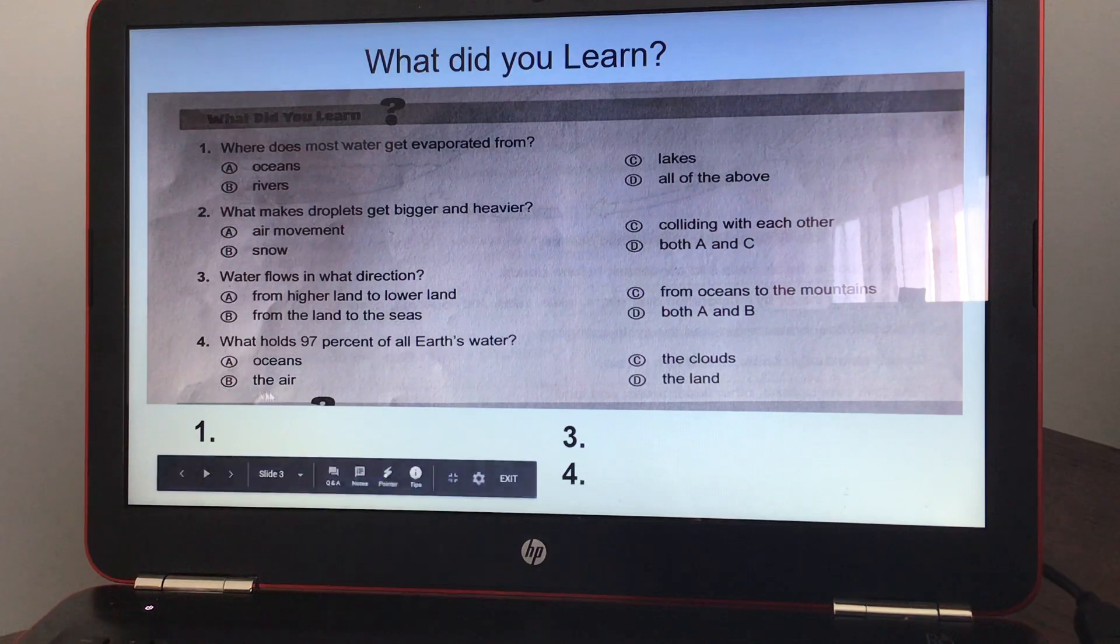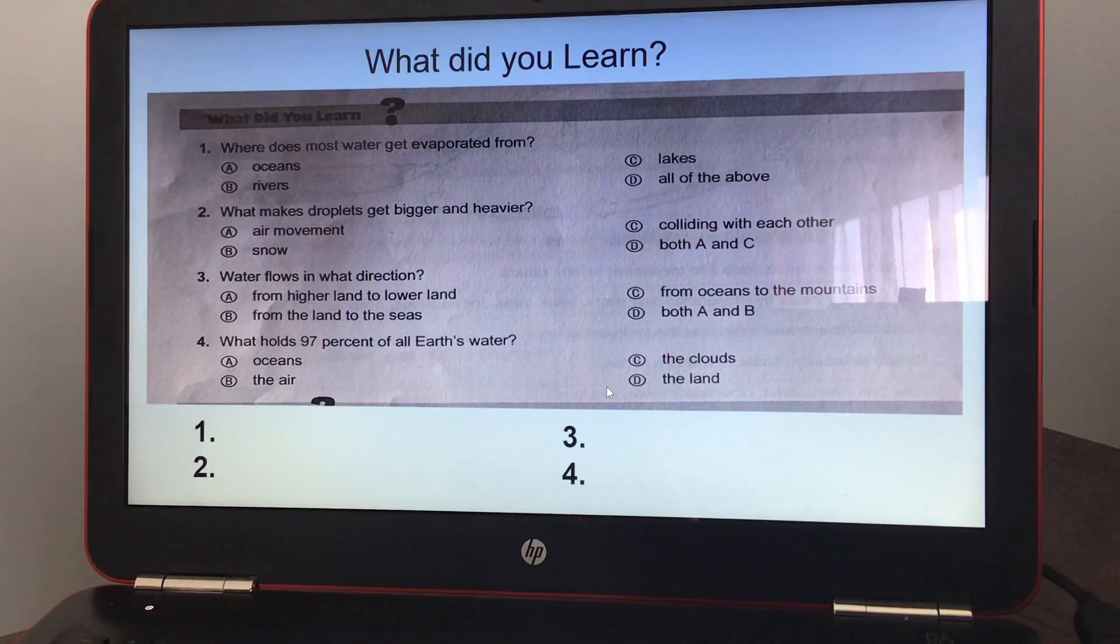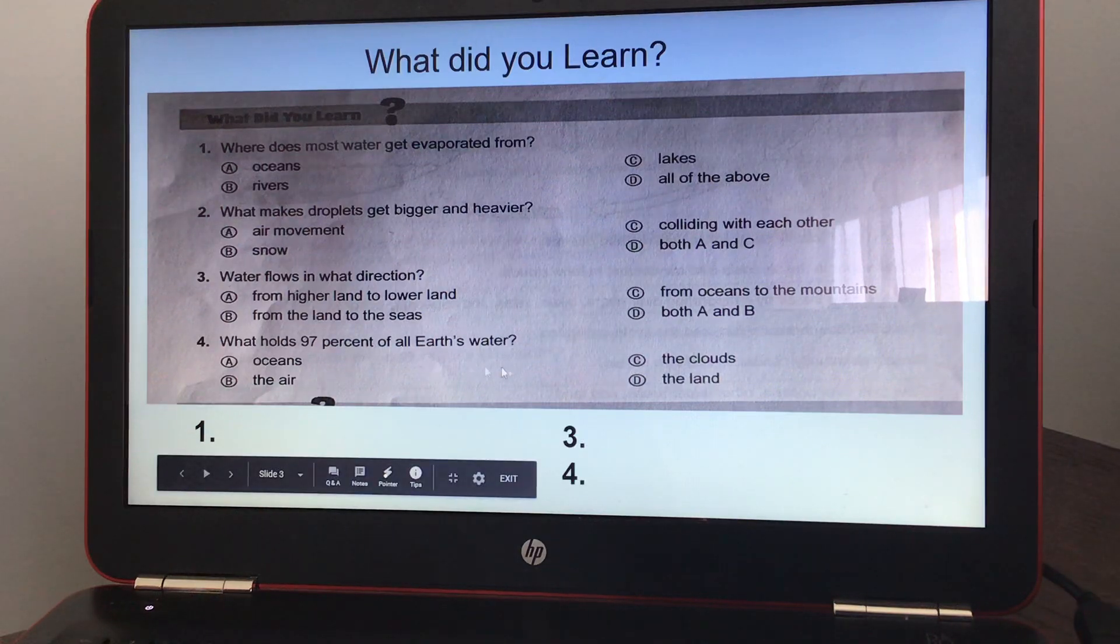Okay, what holds 97% of all Earth's water, A, oceans, B, the air, C, the clouds, or D, the land? And four should have been A, oceans.